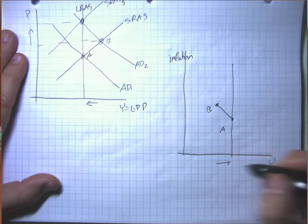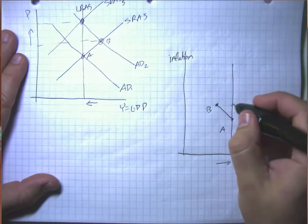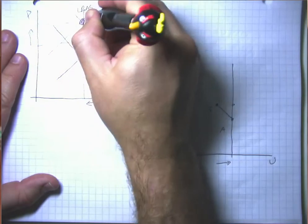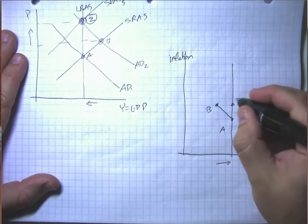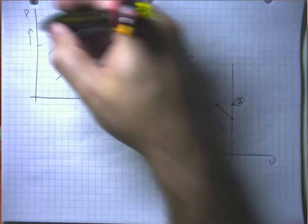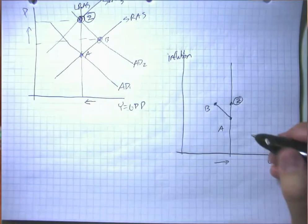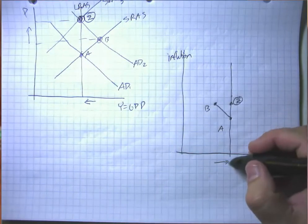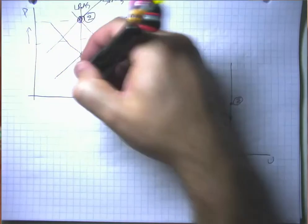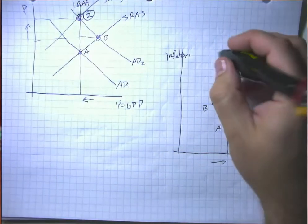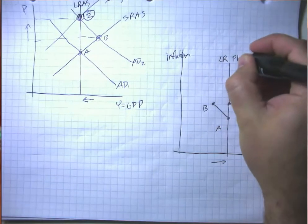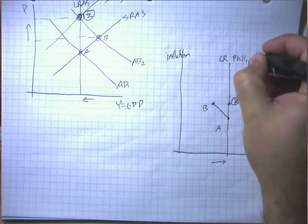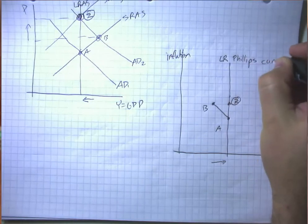And if GDP goes back to its normal level, then unemployment goes back to its normal level. So a point like Z up here in this diagram corresponds to a point like Z in this diagram down here because we have yet higher price level, but the important point here is that GDP has returned to its natural rate and so has the unemployment rate.